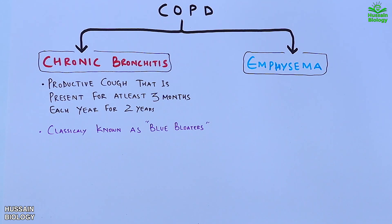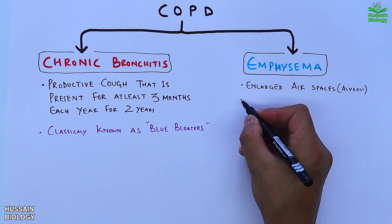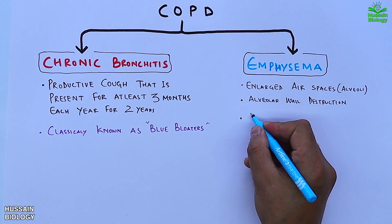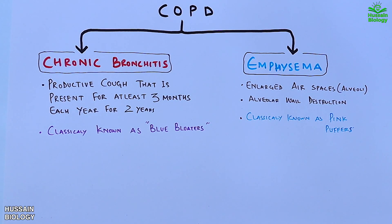On the other hand we have emphysema, which is a condition with enlarged air spaces and alveolar wall destruction. This condition is classically known as 'pink puffers' because people with emphysema typically find it difficult to catch their breath, taking short fast breaths or gasping. This fast labored breathing may cause their skin to appear red or pink temporarily.